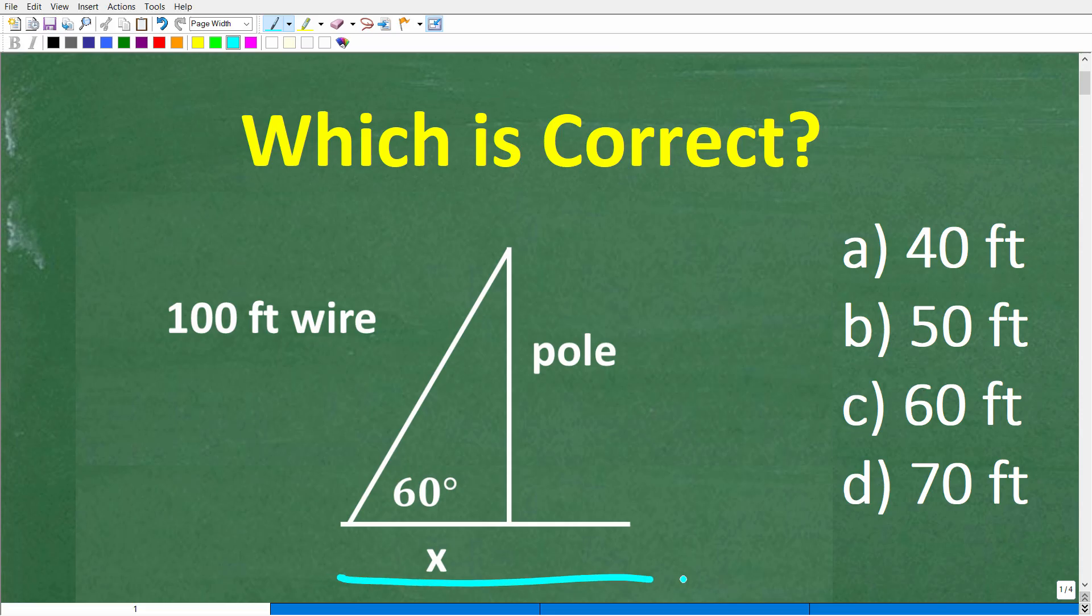We have a triangle type situation and this line right here represents a pole, maybe like a flag pole, and this other line would represent maybe like the ground. Now, we have to make an assumption that the pole is perpendicular to the ground. We have a wire that extends from the top of the pole all the way down to the ground and that's under tension, so we're going to have to assume that that is also a straight line and the length of this wire right here is 100 feet.